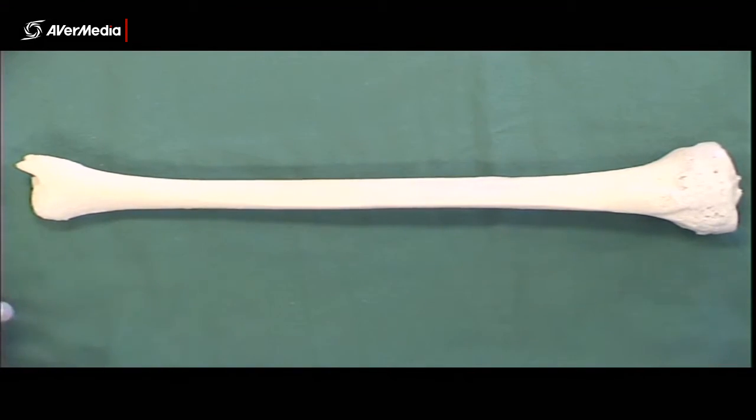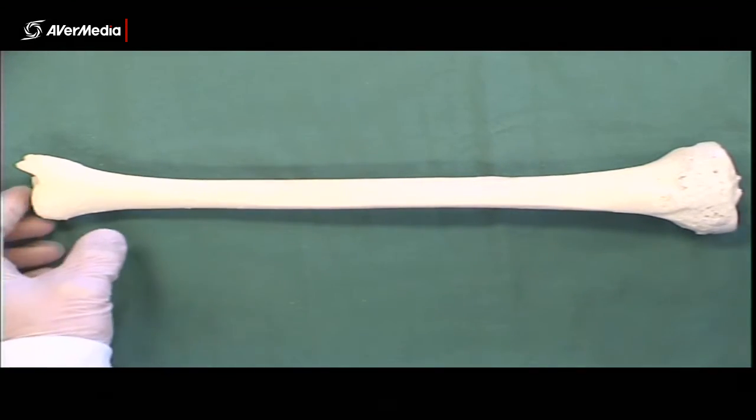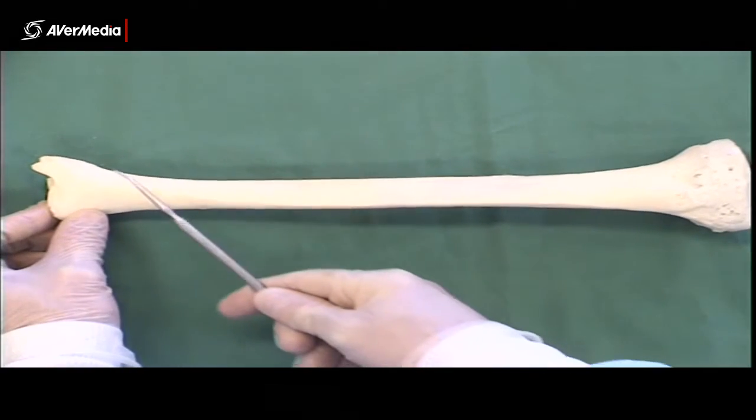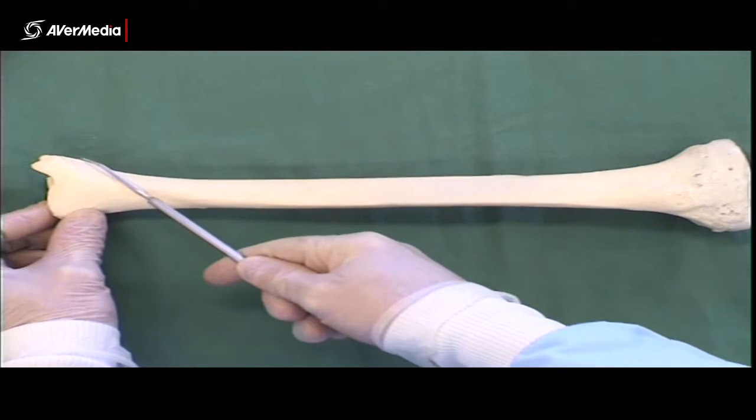Looking at the tibia, we've got an anterior view here of a left tibia, and we can tell that because we've got a medial malleolus down the distal end.